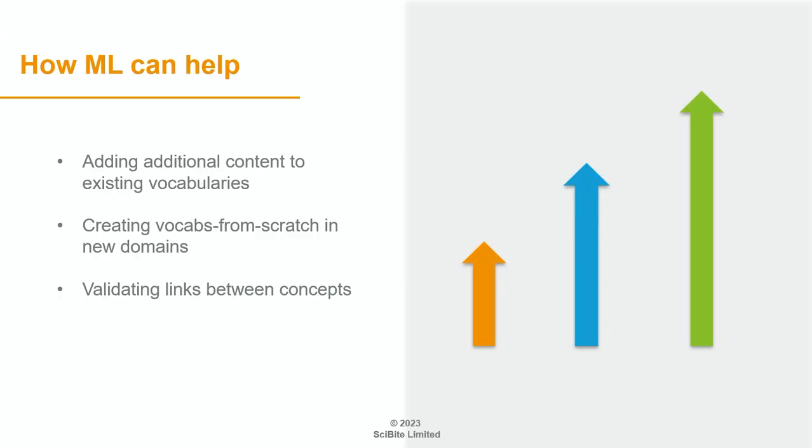Then there's creating vocabs from scratch. Most of our customers at SciByte are in the scientific or life sciences domain, but we do projects outside of that — things like engineering and law. When we need to make a bespoke custom vocabulary, there's not always a good source to base that on. How do we start a vocab completely from scratch and know that it will have good coverage and that we're hitting the right entities? And a third use case is validating links between those concepts, so you can make more meaningful queries — most of our vocabs don't work as just a standalone. You want to combine the data: look at the drugs and what indications those drugs are developed for, what the adverse events are from those drugs, what the targets are.